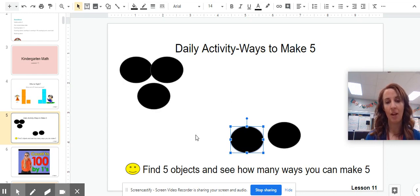Now it's your turn. You can go look around your house to see if you can find five objects. This could be pieces of cereal, small toys, crackers, anything you find. See how many different ways that you can make five.